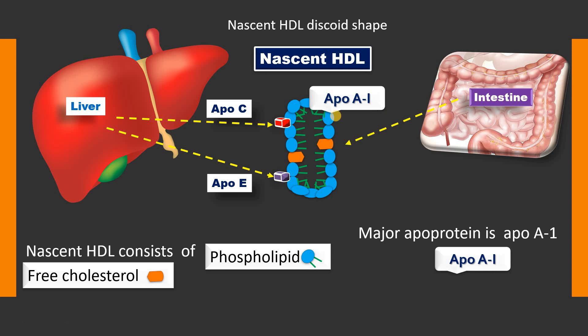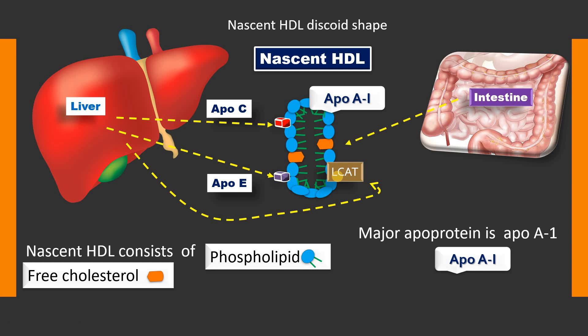This nascent HDL also acquires an important enzyme in HDL metabolism from the liver through the circulation — the enzyme LCAT. This enzyme plays a very important role in reverse cholesterol transport. The function of HDL: we say HDL is good cholesterol because it removes cholesterol from peripheral tissue and hands it over to the liver, where it can be metabolized to bile and excreted into the intestine. Before going further, you should know something about the enzyme LCAT.